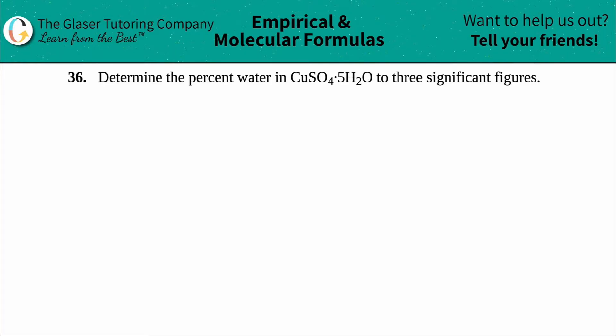Number 36, determine the percent water in copper-2-sulfate pentahydrate, aka CuSO₄·5H₂O, and we need to do this in three significant figures, aka three sig figs.